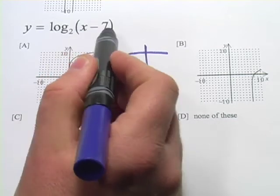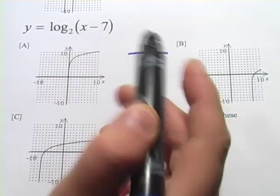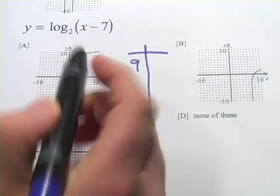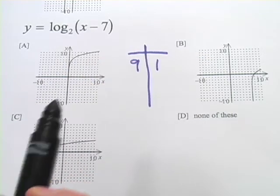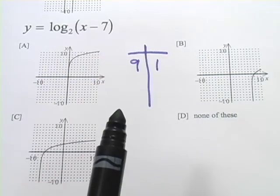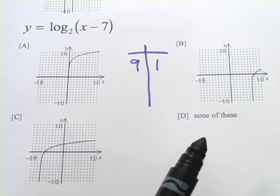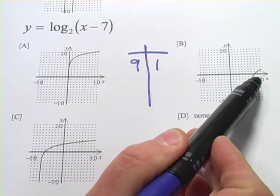So what would I have to put in here to make this equal to 2? Since I've got a minus 7, I have to put in a 9 for x. That would make this a 2, and the expression would then become 1, the first power. So 9, 1 should be on this graph. And it looks like it's on B.